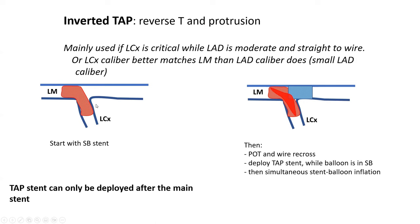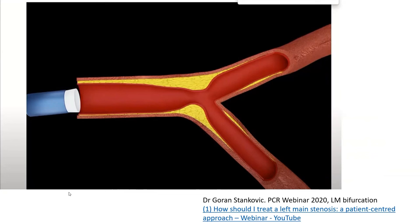TAP may be applicable for angles that aren't close to 90 degrees — this illustration shows about 30 degrees. You can also do inverted TAP where you start your stent from left main to left circumflex, then do the TAP stent in the LAD. Inverted TAP is done if the left circumflex disease is critical while the LAD disease is moderate, or if the left circumflex caliber better matches the left main caliber than the LAD caliber does. Even if you're doing upfront two-stent strategy, you start with the left main to left circumflex, then put your TAP LAD stent afterward.